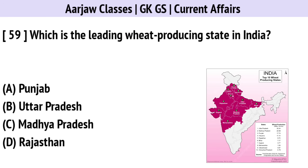Which is the leading wheat producing state in India? The correct option is B — Uttar Pradesh.